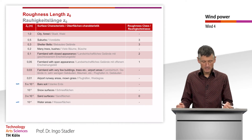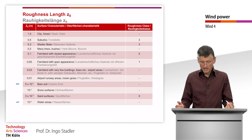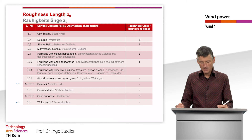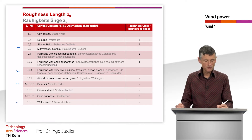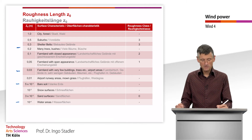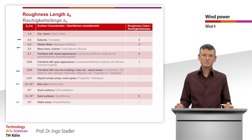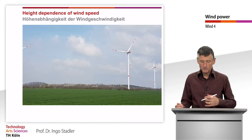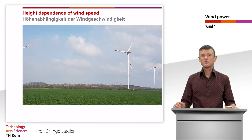For bare soil the roughness length is in the range of 5 times 10 to the minus 3 meters. For farmland with a few buildings it is about 3 centimeters. Areas with a lot of trees and bushes have a roughness length of about 20 centimeters, and suburb areas where we can also find wind turbines or wind parks are already at half a meter. This roughness length z-zero is what we need when calculating wind velocities at different heights for a given surrounding surface.